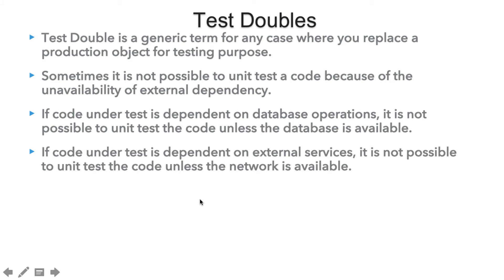It may also happen that our code under test is dependent on external services. In that case, it is not possible to unit test the code unless the network is available. If we're writing tests which are dependent on external services, we need to go to the network to perform our testing, and unless the network is available, it is not possible to unit test our code.